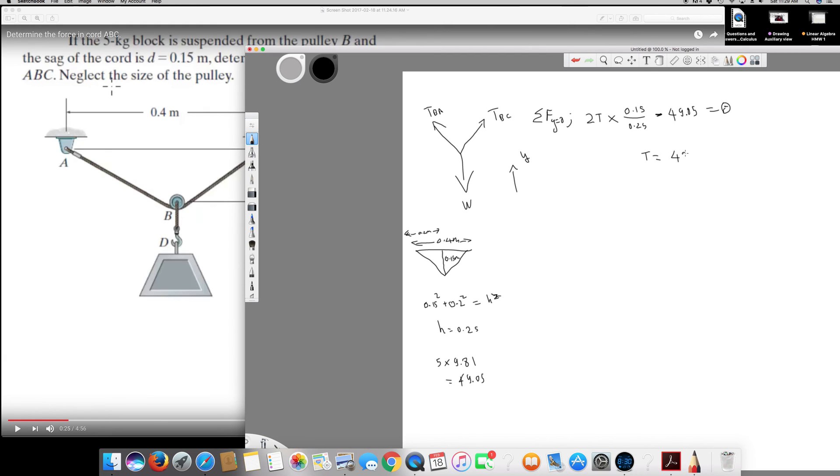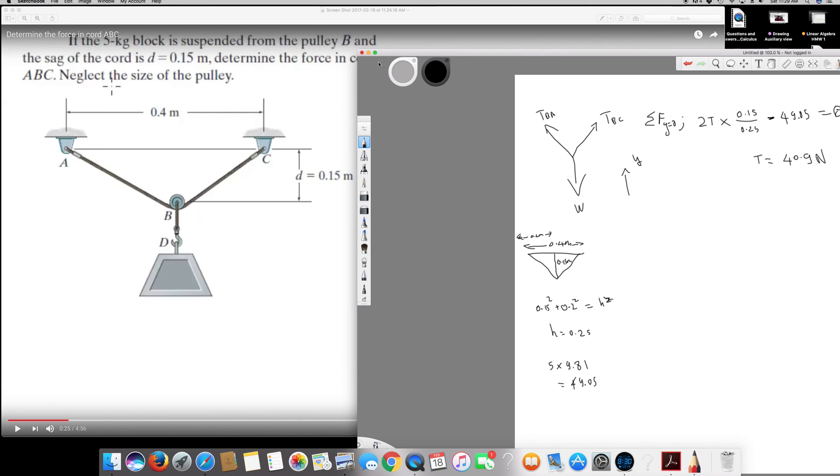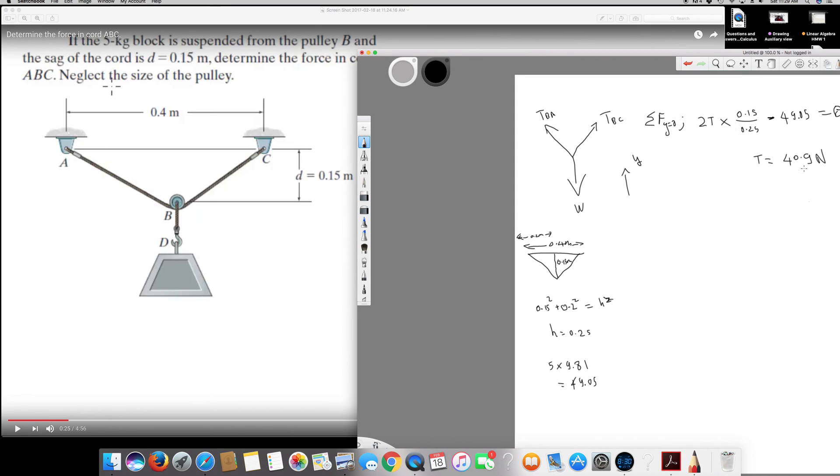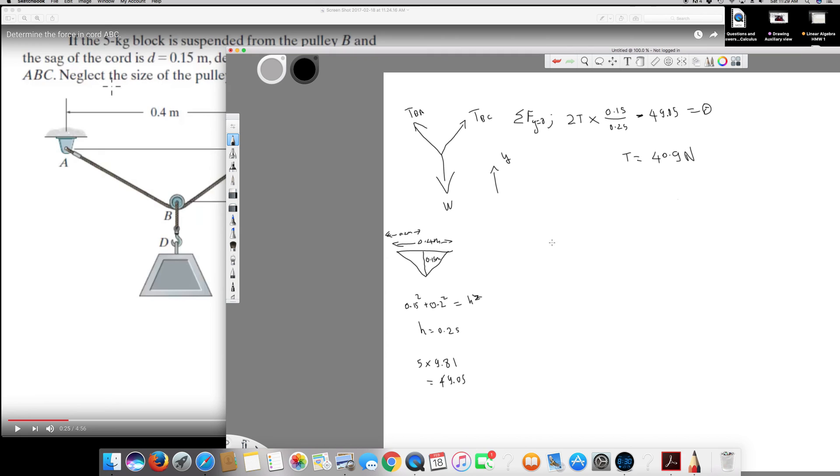So 40.9 Newton, this is my final answer. That's the question - they are asking determine the force in the cord ABC. So this is the force in the cord ABC. Thank you for watching guys, see you next time.